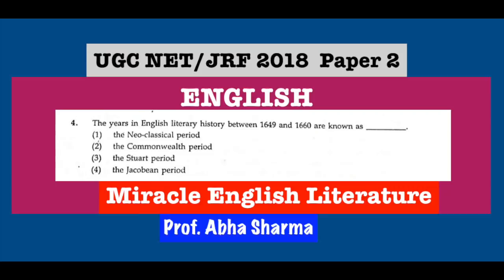Question number 4: The years in English literary history between 1649 and 1660 are known as? If you have read history thoroughly, you can easily find the answer: the Commonwealth period. Charles I was taken into custody, put on trial, and then executed. Then Oliver Cromwell took Parliament in his hand, but his successors proved weak. So in 1660, Charles II was restored — the Restoration period, the new classics. The correct answer is the Commonwealth period.